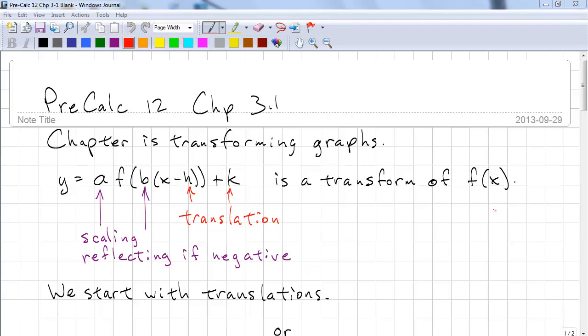We're going to start with translations. The general form of all transformations is y equals a f of b times x minus h plus k. So h and k control the translation of a function.